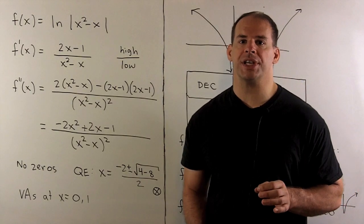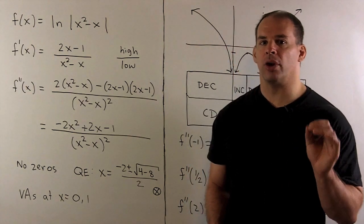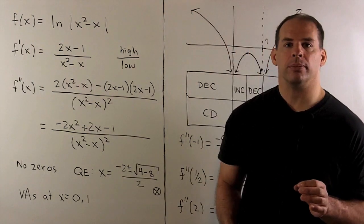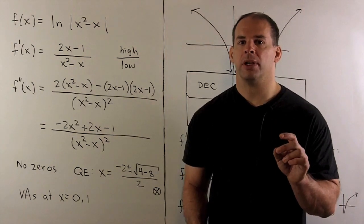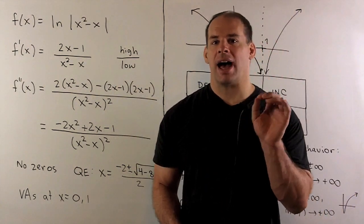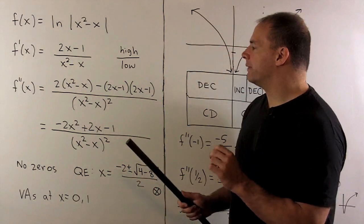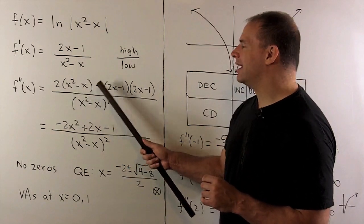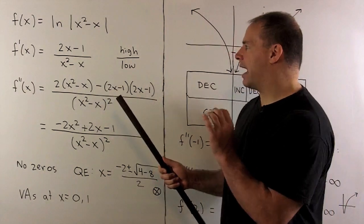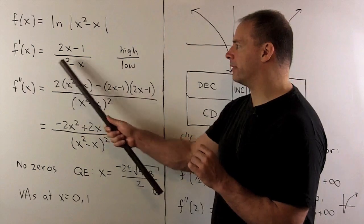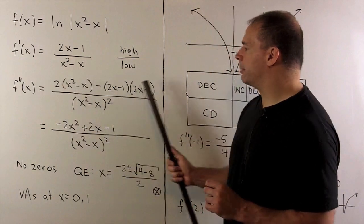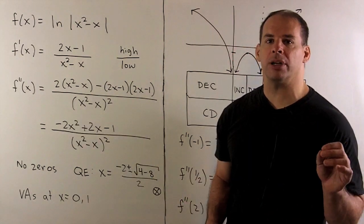Now let's look at concavity, which requires the second derivative. We start from f'(x) = (2x - 1)/(x² - x) and apply the quotient rule — remembering the mnemonic: low d-high minus high d-low, over low squared. Low is x² - x, d-high (derivative of 2x - 1) is 2; high is 2x - 1, d-low (derivative of x² - x) is also 2x - 1. Simplifying the numerator gives a quadratic with no real zeros.